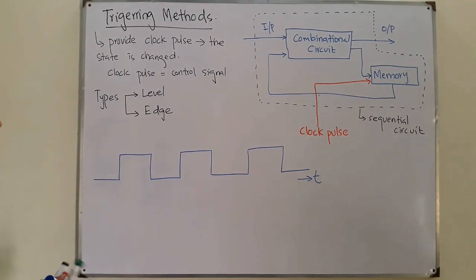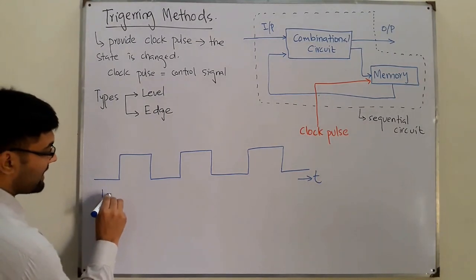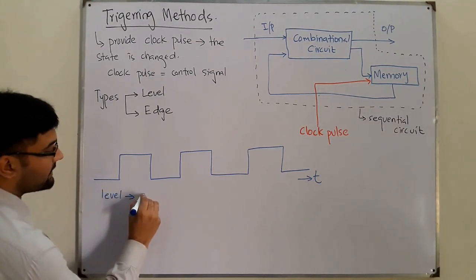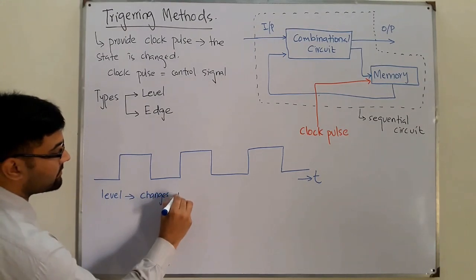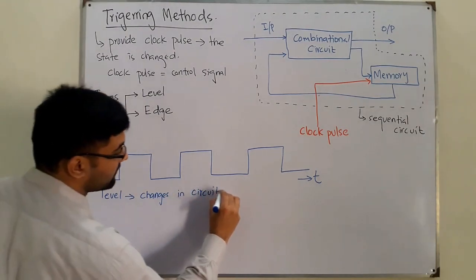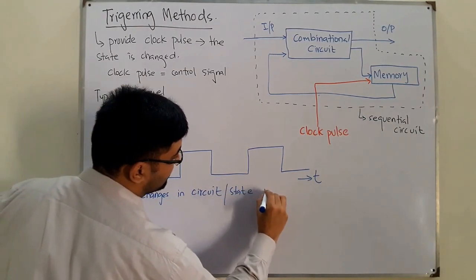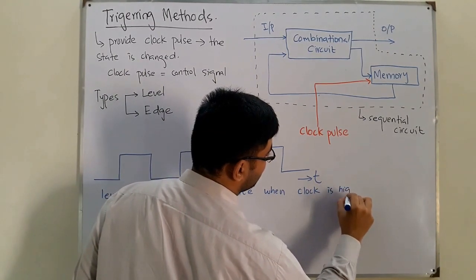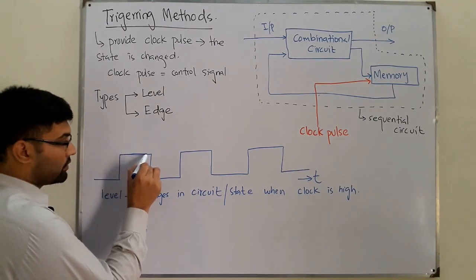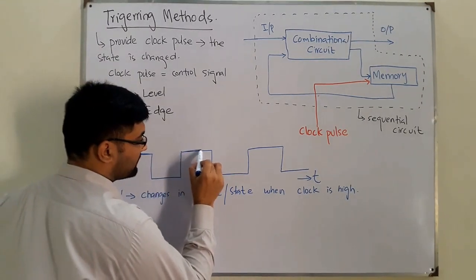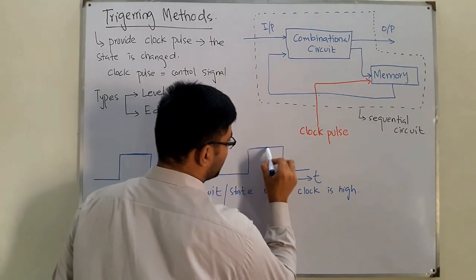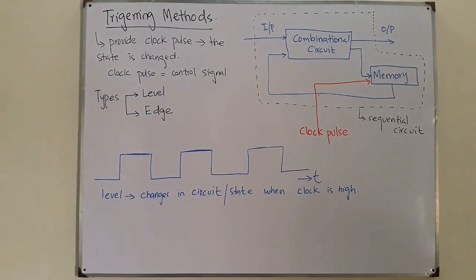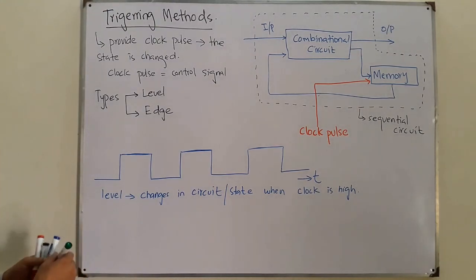Level triggering is that changes will occur when the signal is high. In level triggering, changes in the circuit — meaning changes in the state — occur when the clock is high. This particular portion of the waveform is important for level triggering: when the clock is high, changes will occur in the circuit.